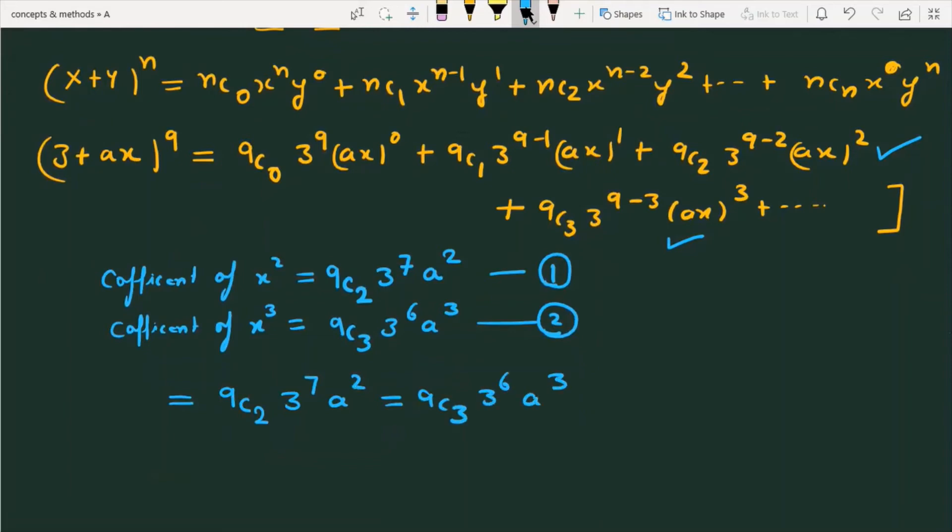Now you can cancel a² from both sides (actually this is not cancellation, a ≠ 0, so we mention the condition that a cannot be zero). Because if a were zero, you couldn't expand this since it would just be 3⁹. So we've canceled a² from both sides.